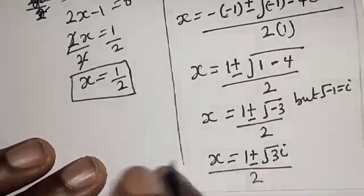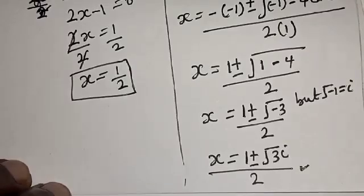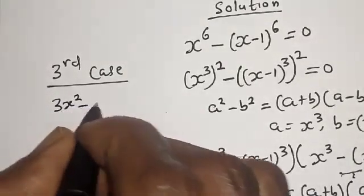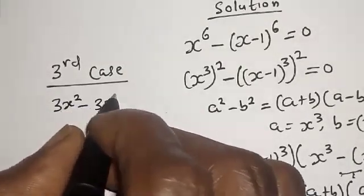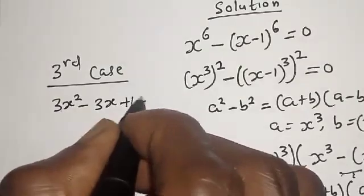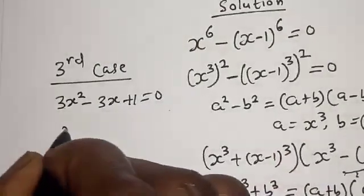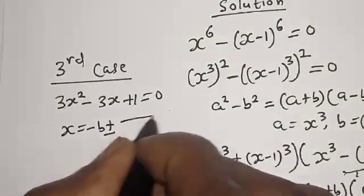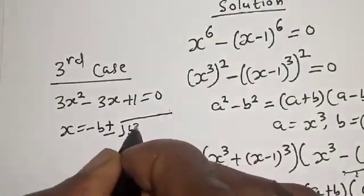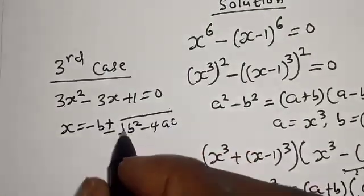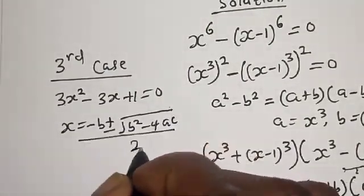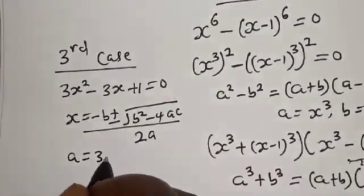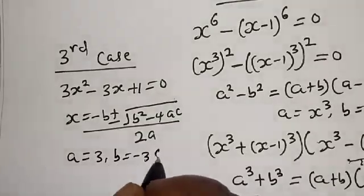For the third case, 3x squared minus 3x plus 1 equals 0, also solved using the quadratic formula: x equals negative b plus or minus square root of b squared minus 4ac divided by 2a, where a equals 3, b equals negative 3, c equals 1.